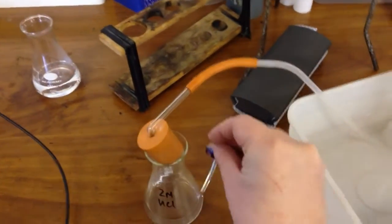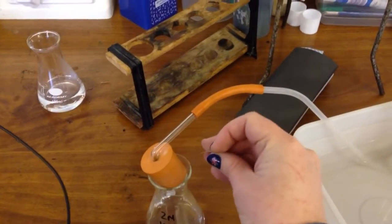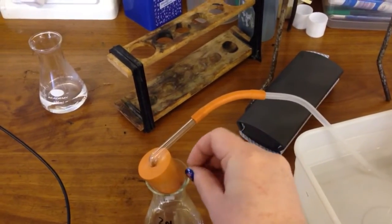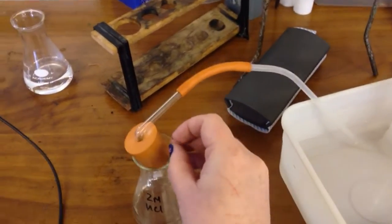So really quickly, I'm going to put the magnesium ribbon into the conical flask and clamp it shut.